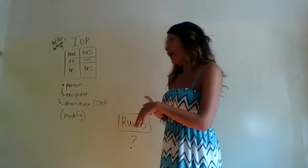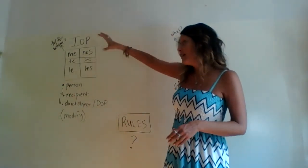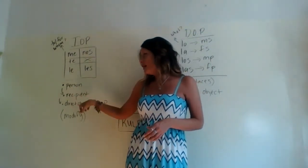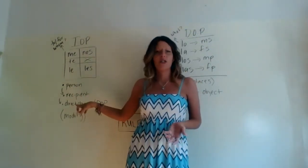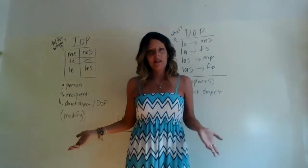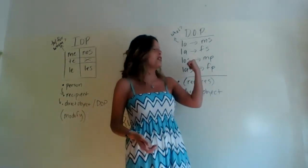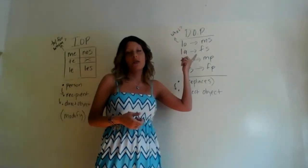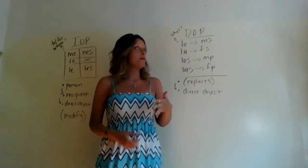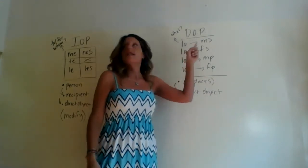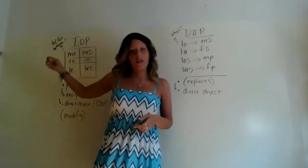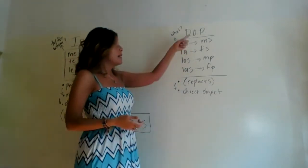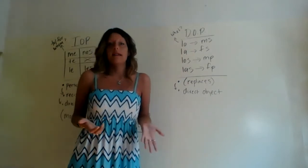So that is a quick review of indirect object pronouns. Now we go over to DOPs — short for direct object pronoun. Where we say that indirect object pronouns often answer the question 'to or for whom,' direct object pronouns answer 'what' in the sentence.